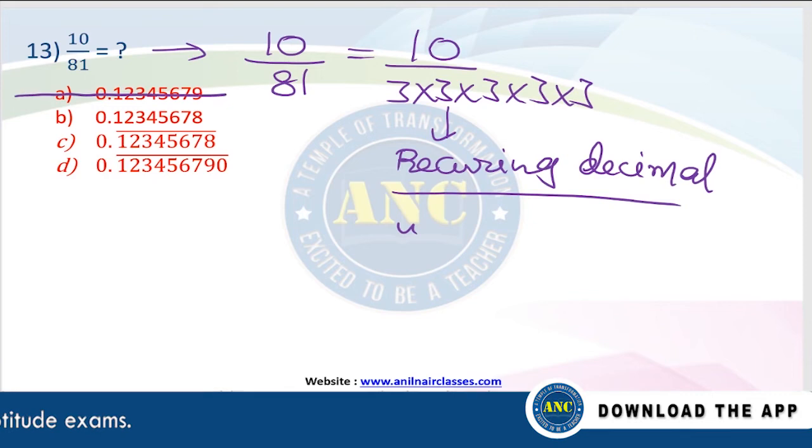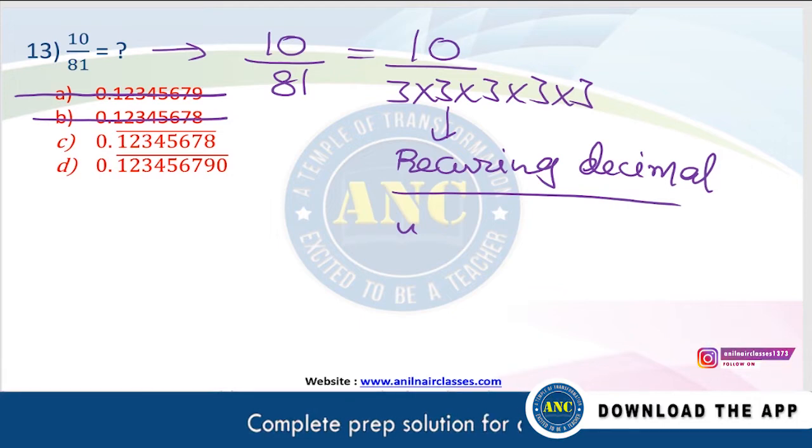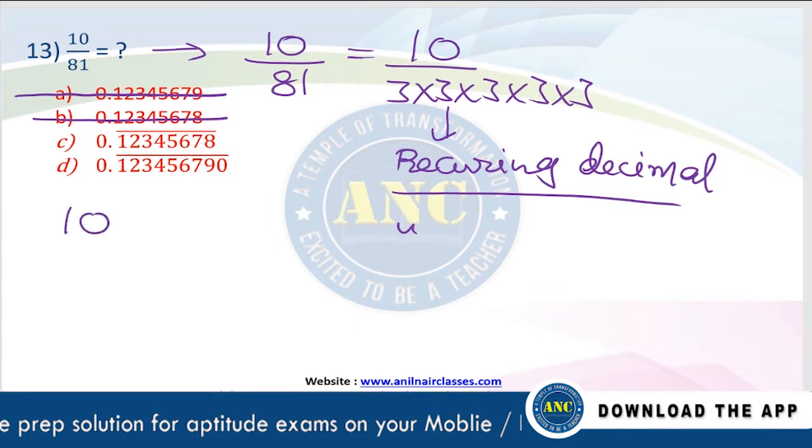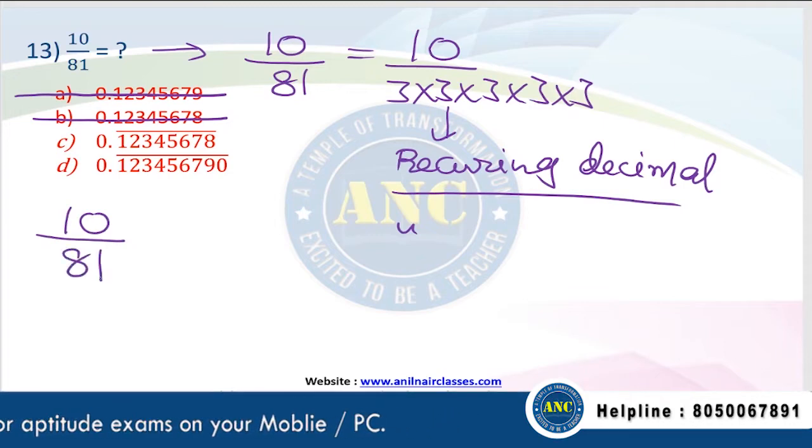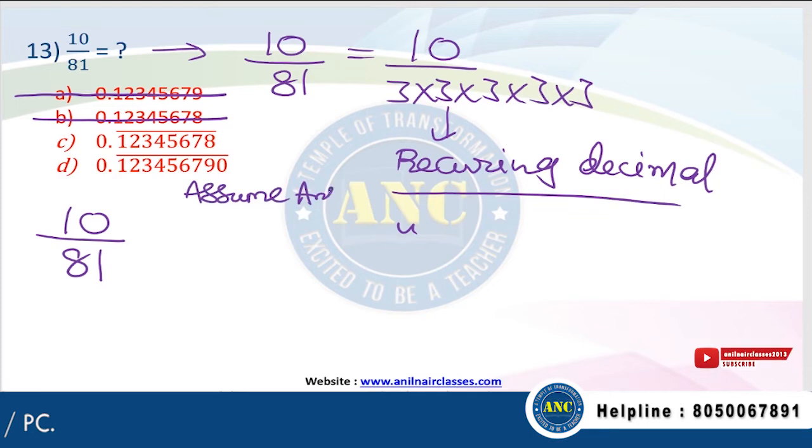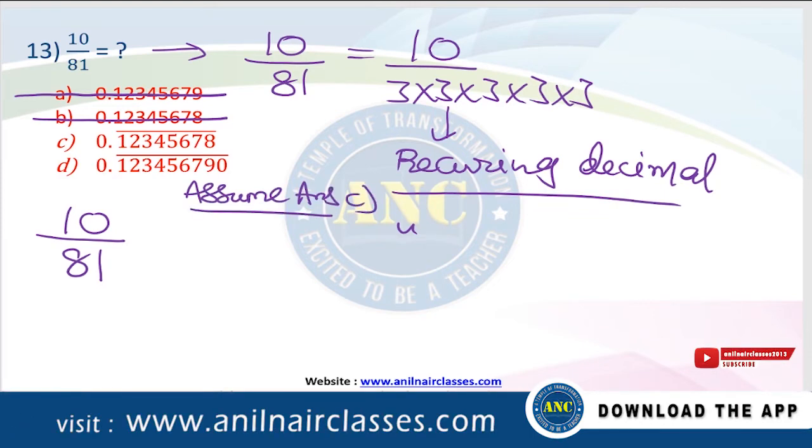This is eliminated. This is eliminated. Are you all with me? Write these eliminated. Now we are struck in two options. Easily you can say which one is right. 10 by 81. If I assume answer as C.